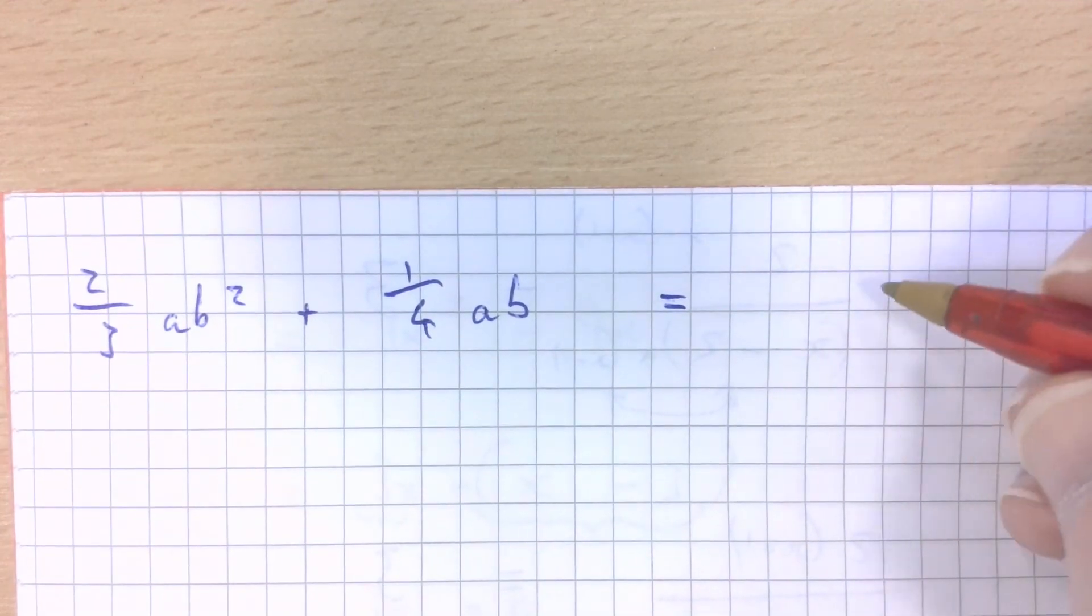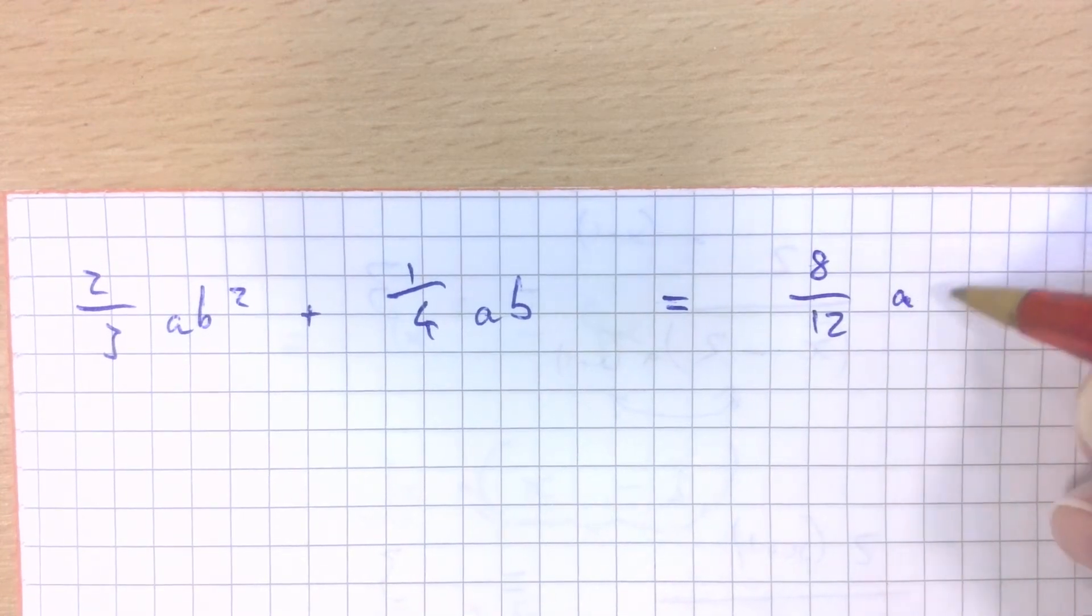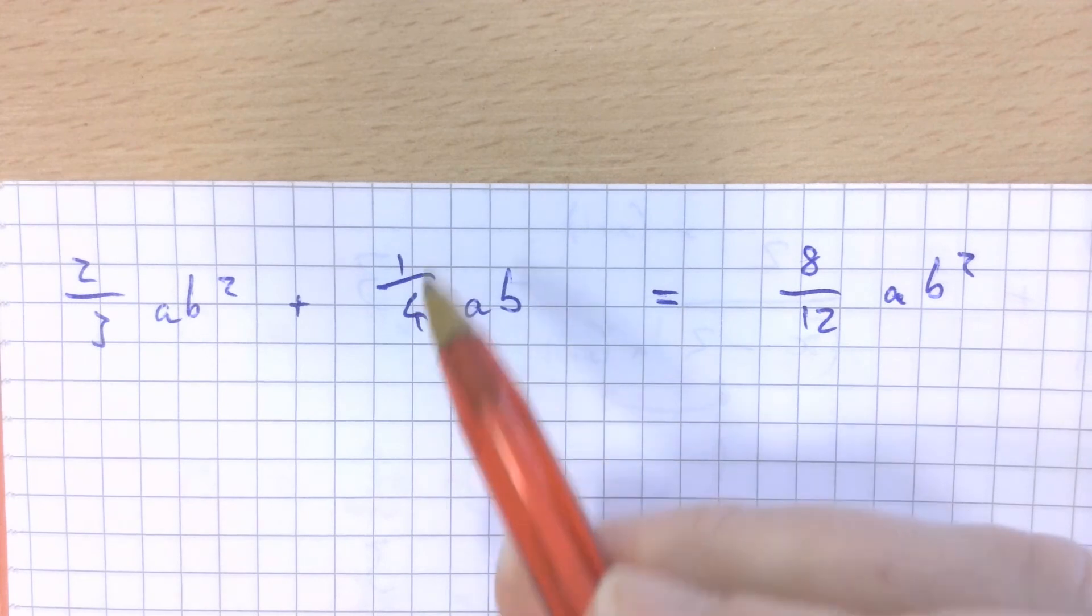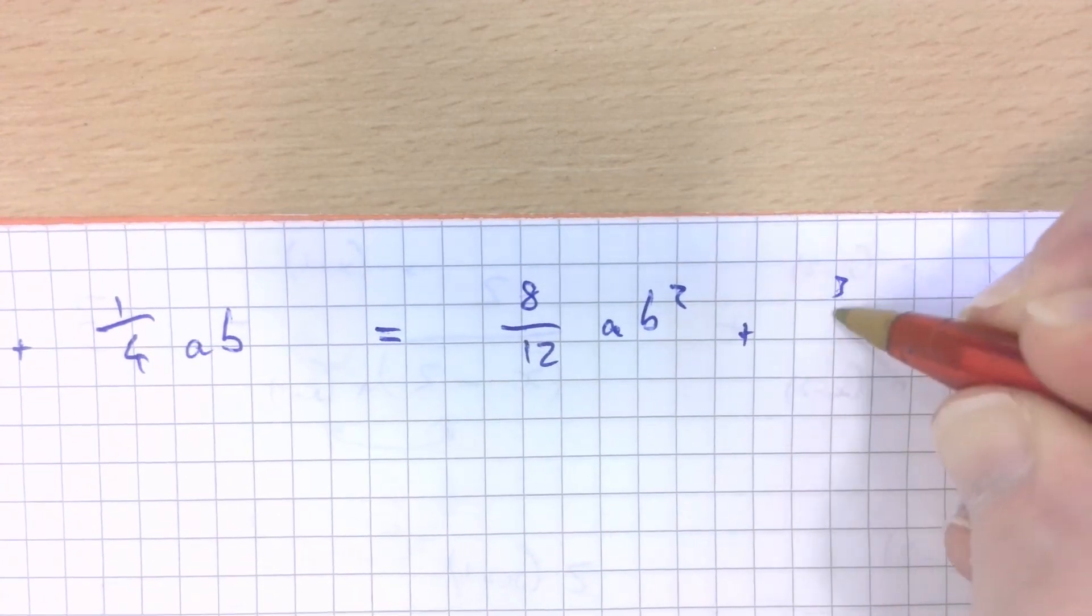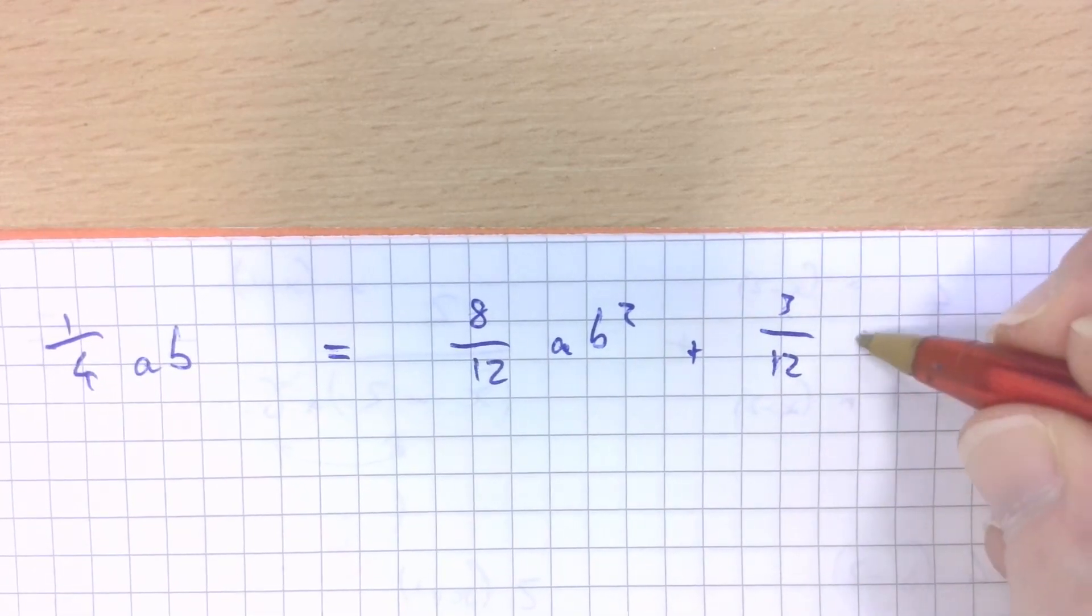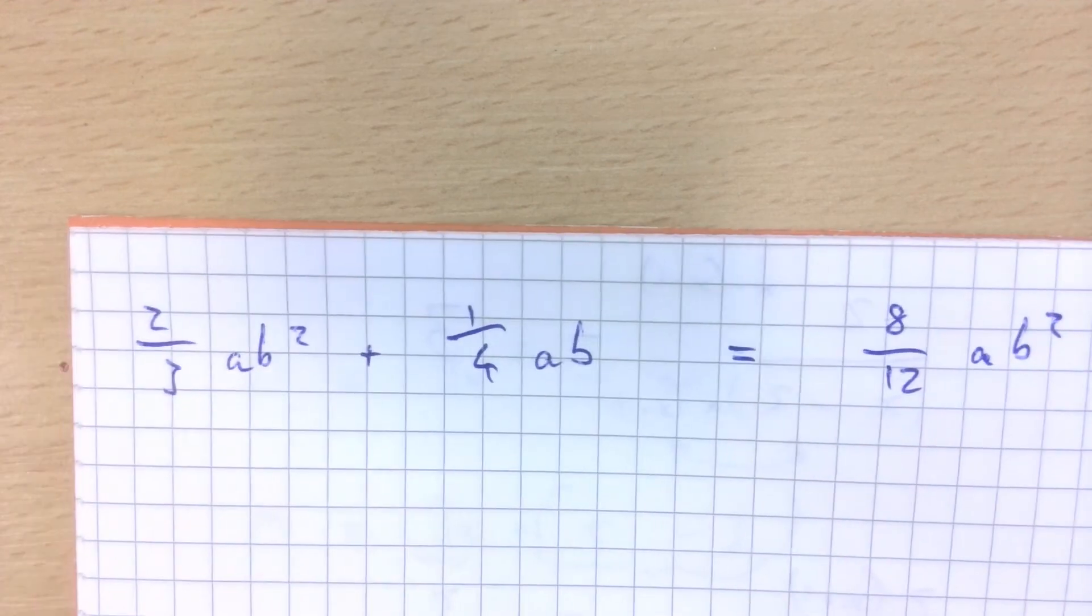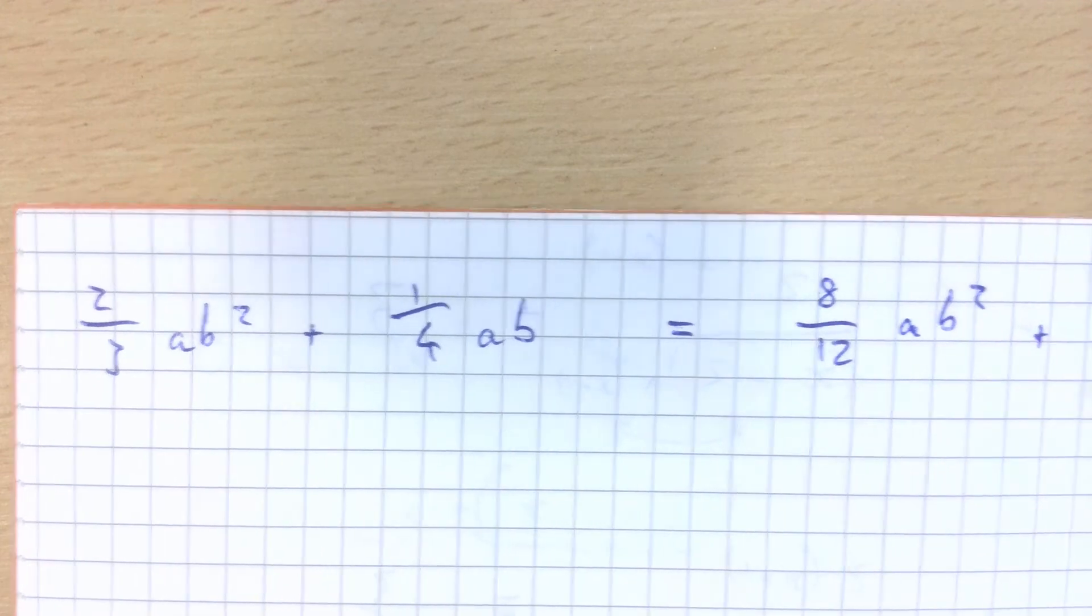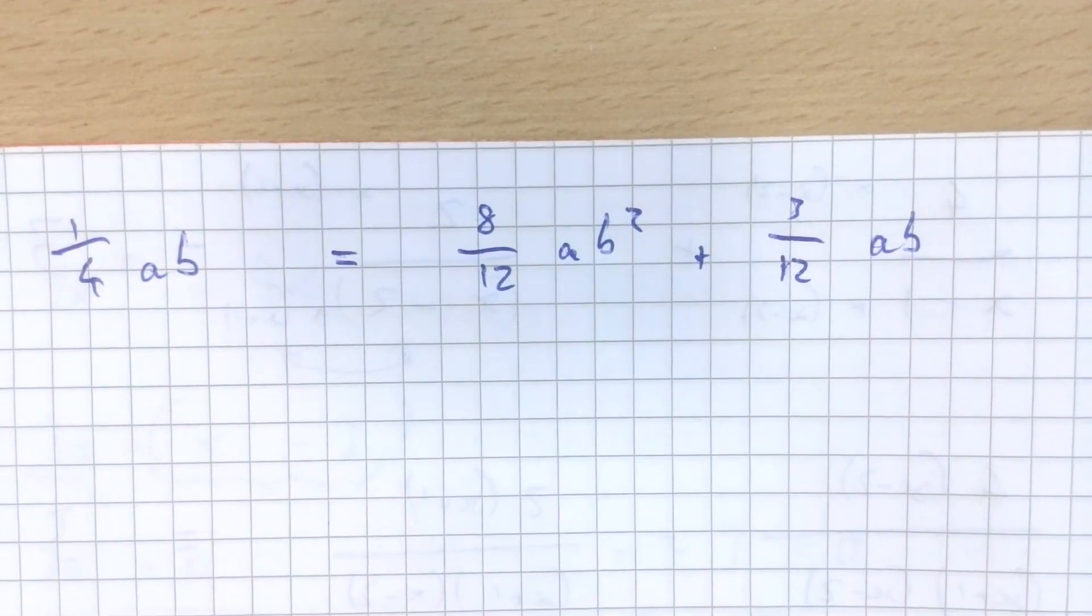So two thirds, you can write as 8 over 12 a b squared, and then times in the top and bottom of this by 3 we'll get 3 over 12 a b. So we've made these fractions at the beginning of each of these terms into common denominator equivalents, twelfths in this case.